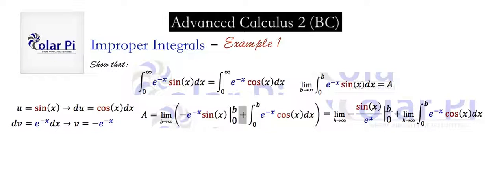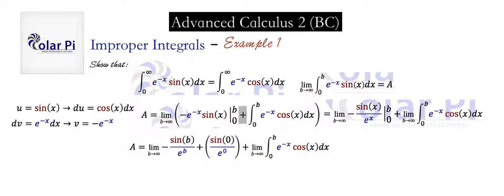Next, we evaluate the first part at b and at zero — plugging in b and then zero and taking the difference. Since the quotient starts with a minus sign, that's why we get a plus in the middle instead of a minus, because it's minus minus. Sine of zero is zero, so that term drops out, and we can write our integral A a bit cleaned up.